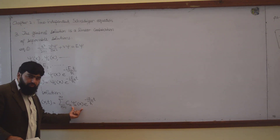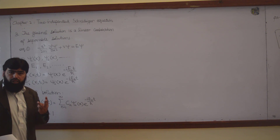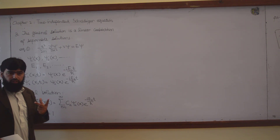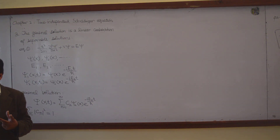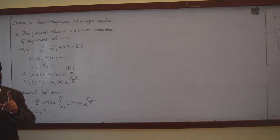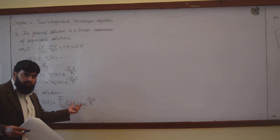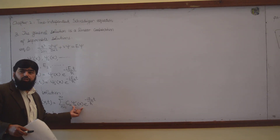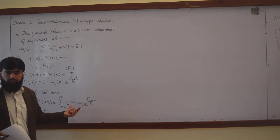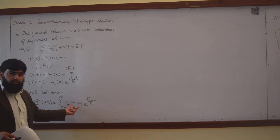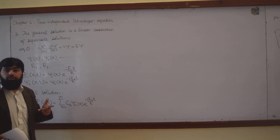These ψₙ's are actually the basis of Hilbert space. Just as the unit vectors x̂, ŷ, ẑ are the orthonormal basis of three-dimensional vector space (magnitudes equal to 1 and mutually perpendicular), the ψₙ's play the same role in Hilbert space. Since a function has an infinite number of components, Hilbert space has infinitely many basis functions, unlike vector space which is limited to three dimensions.